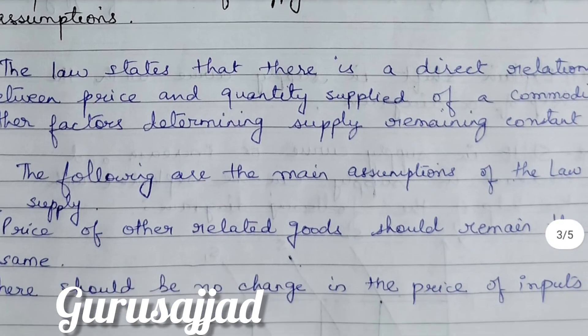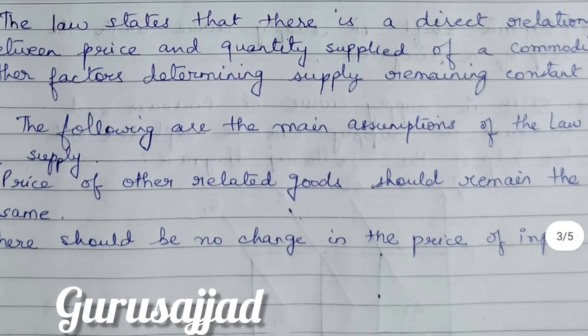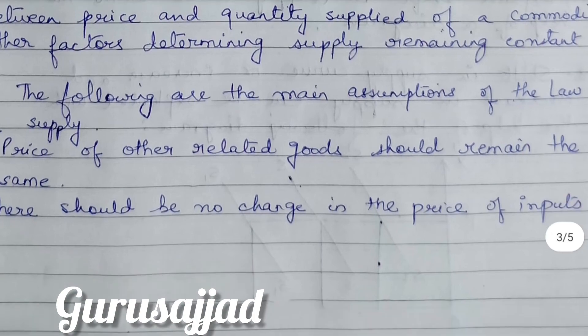This question has also been asked: state the two assumptions of the law of supply. The following are the main assumptions: (1) Prices of other related goods should remain the same, and (2) there should be no change in the price of inputs.